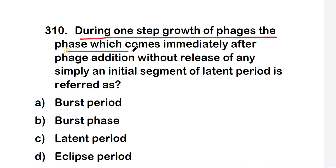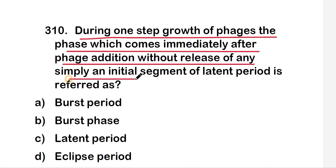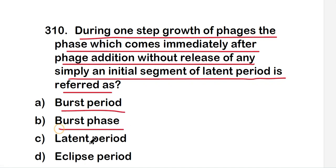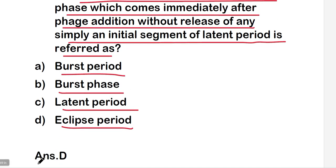The next question is: during one-step growth of phages, the phase which comes immediately after phage addition without release of any virion — the initial segment of latent period — is referred to as burst period, burst phase, latent period, or eclipse period? The right answer is option D, that is eclipse period.